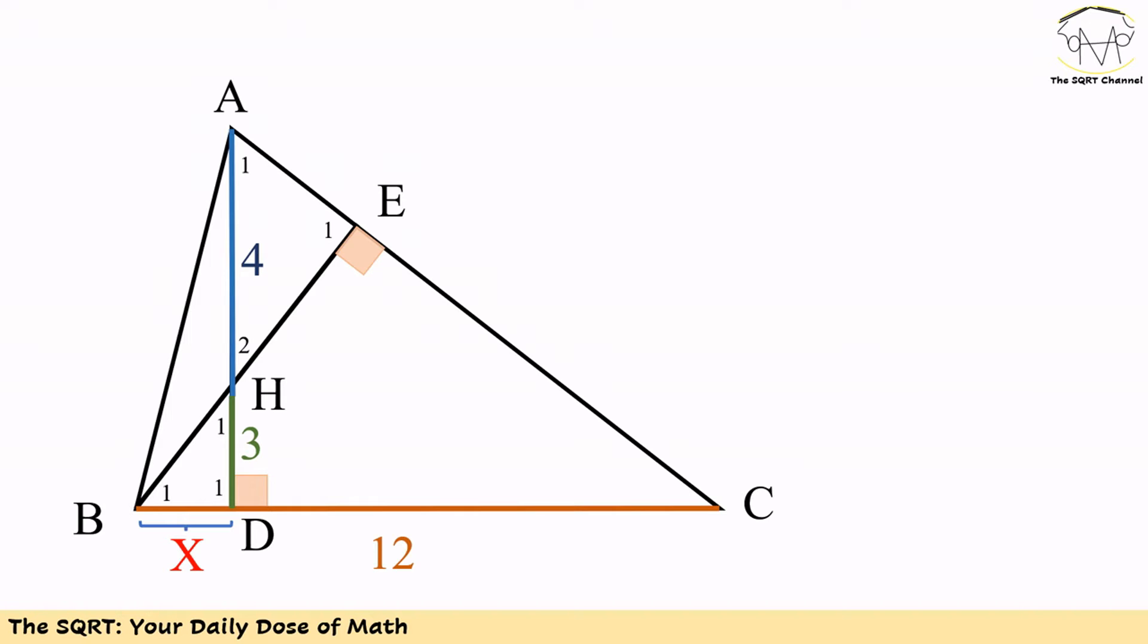Now we have two equations. First, we know BD times CD equals 21, and the second one is BD plus CD equals 12. Based on these two, we can write a quadratic equation: x squared minus 12x plus 21 equals 0.